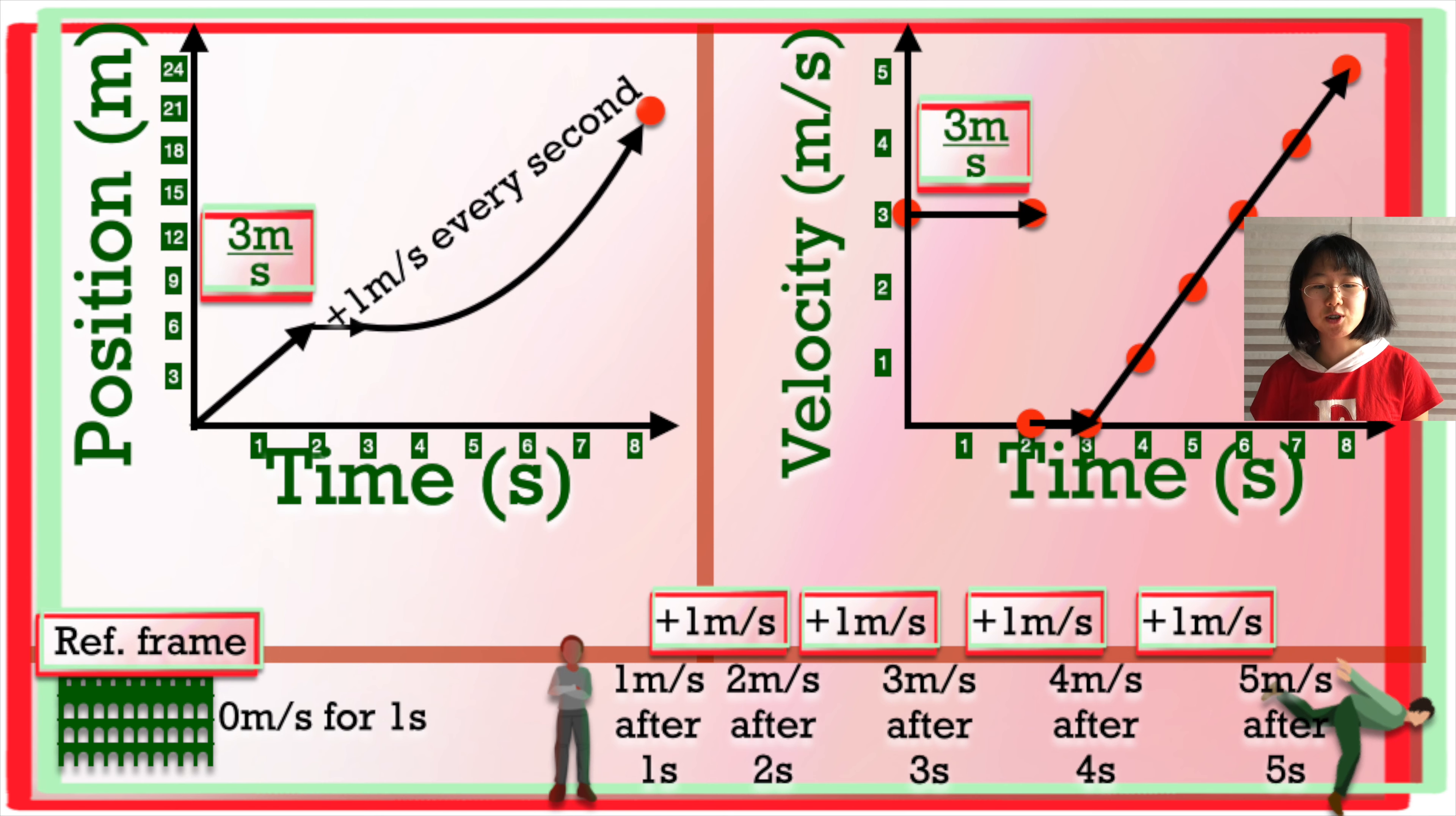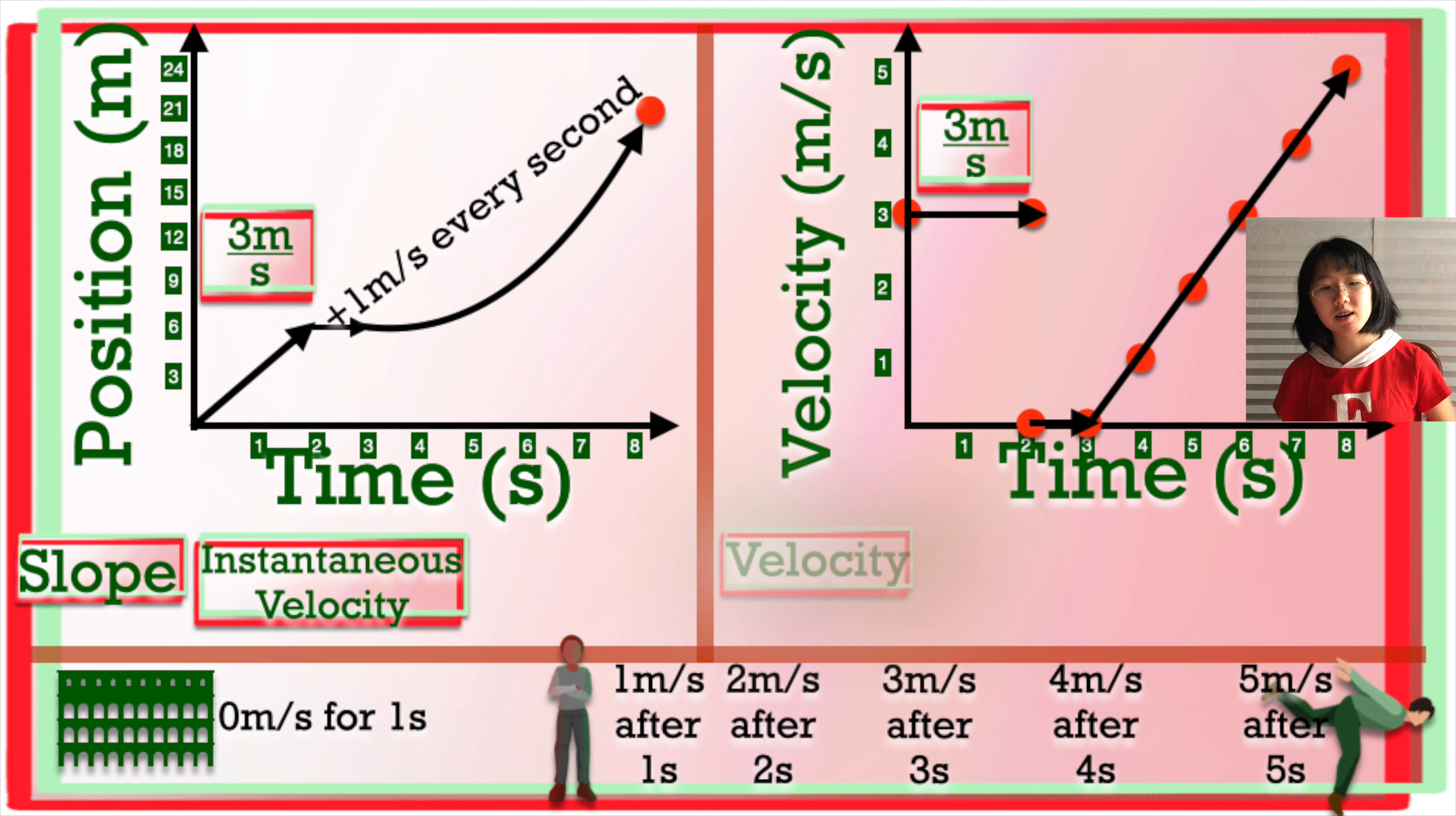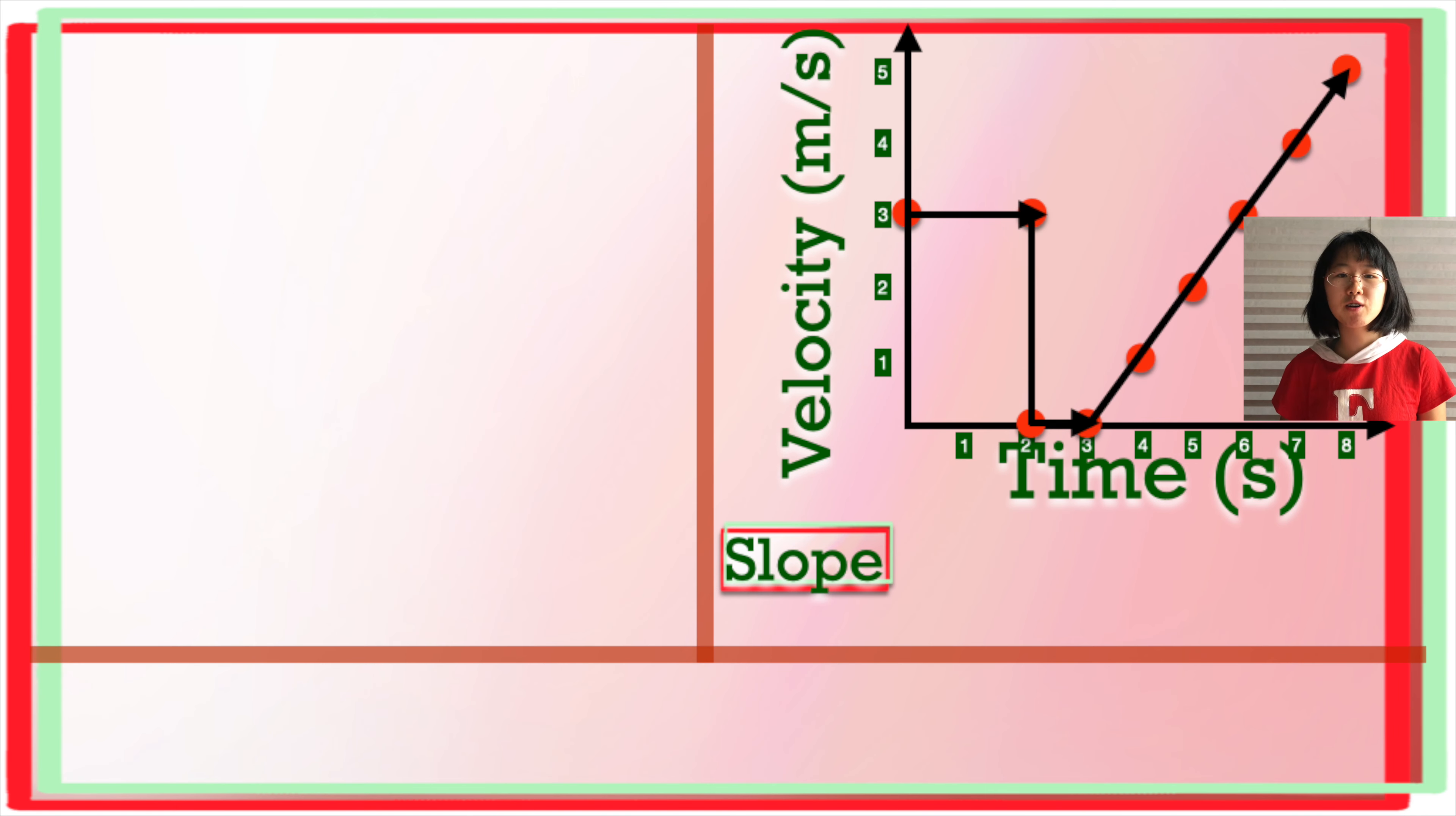When we were looking at that position time graph earlier, the slope of the graph was the way that we found our instantaneous velocity, which we could transfer to our velocity time graph. That's because the definition of velocity is change in position over time, which is exactly what slope was in that graph. Remember, slope is rise over run, which was change in position over time in that graph. Now, when we look at the slope of our velocity time graph here, that gives us our acceleration. Acceleration is defined as change in velocity over time, so once again, that fits the slope of our graph.